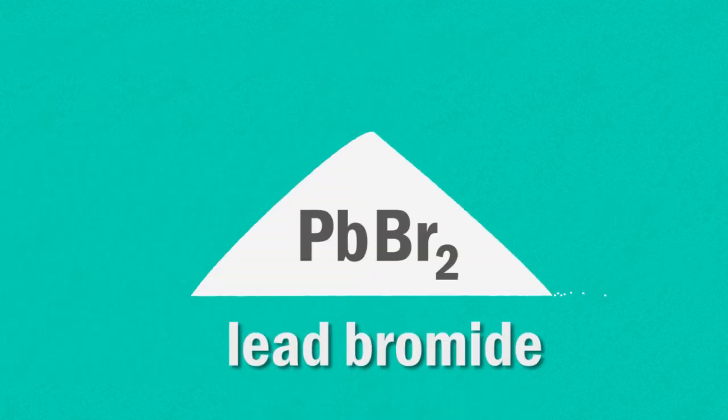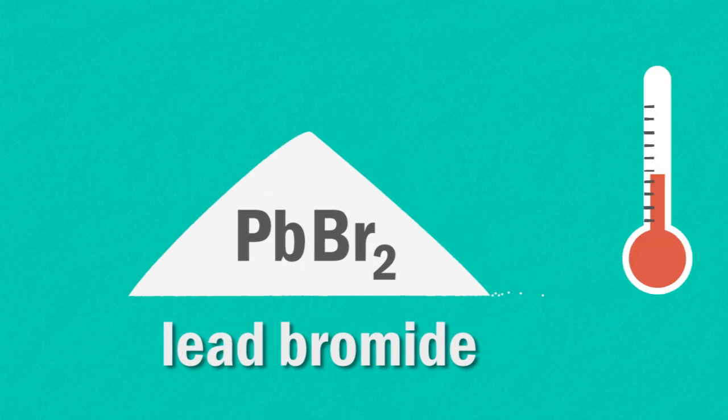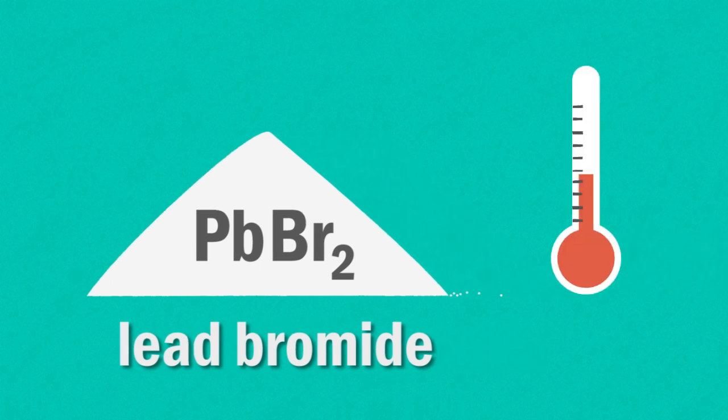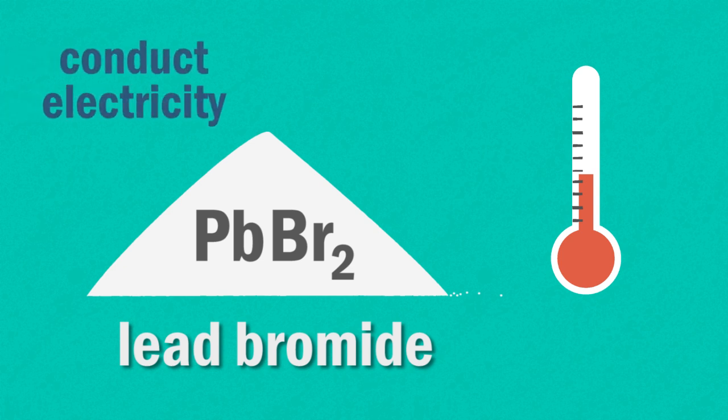Another example of electrolysis is with lead bromide, which can actually be done in a laboratory. At room temperature, it's a solid, and as we've seen with other ionic solids, it won't conduct as the ions cannot freely move.